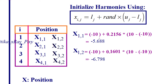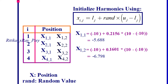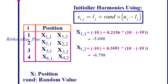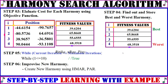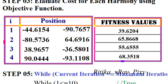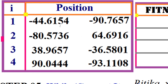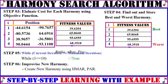To initialize harmonies randomly, use the formula: lower bound + rand × (upper bound − lower bound). For position x11 with lower bound -10 and upper bound 10, a value is generated using a normally distributed random value. Like that, values for all positions are calculated. For example, with bounds from -100 to 100, all generated values fall within the bounds.